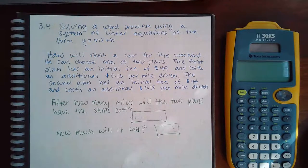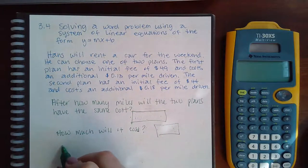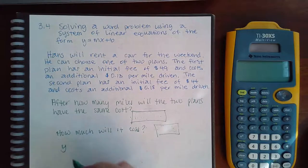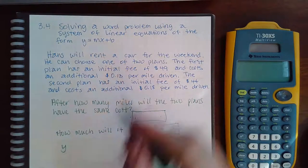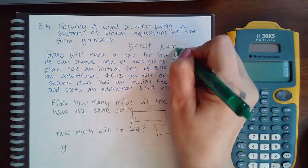So we do need to set up the two equations. For the first plan, we have that the cost, we'll use y for cost. So y will equal cost and then x will equal the miles driven.